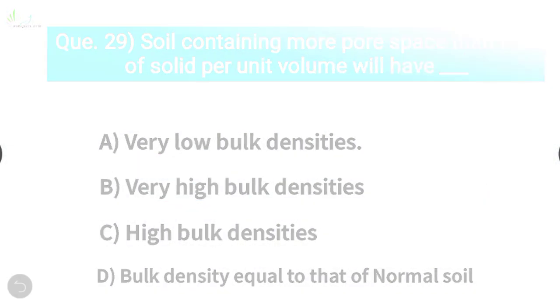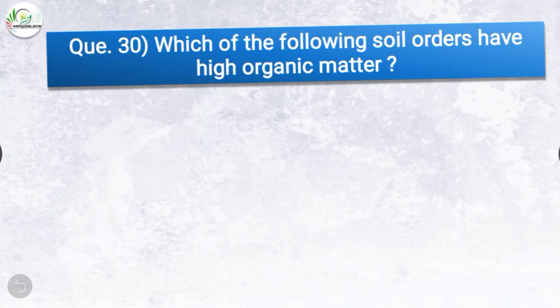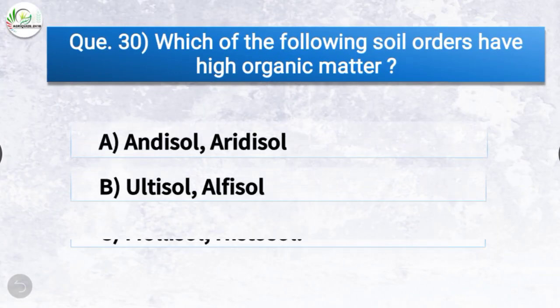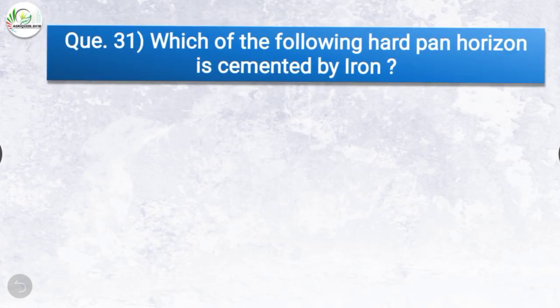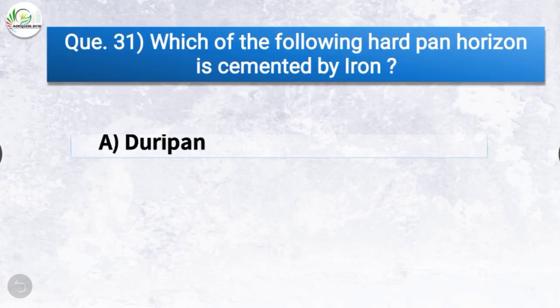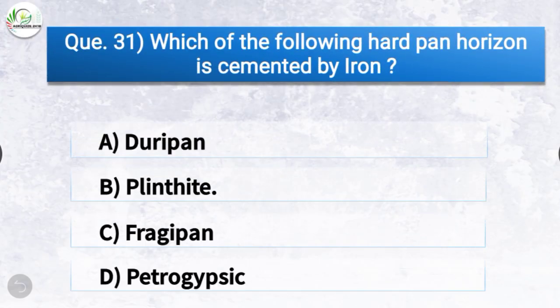Question number thirty: which of the following soil orders have high organic matter? The correct answer is option C, Mollisol and Histosol. Question number thirty-one: which of the following hardpan horizons is cemented by iron? The correct answer is option B, laterite.